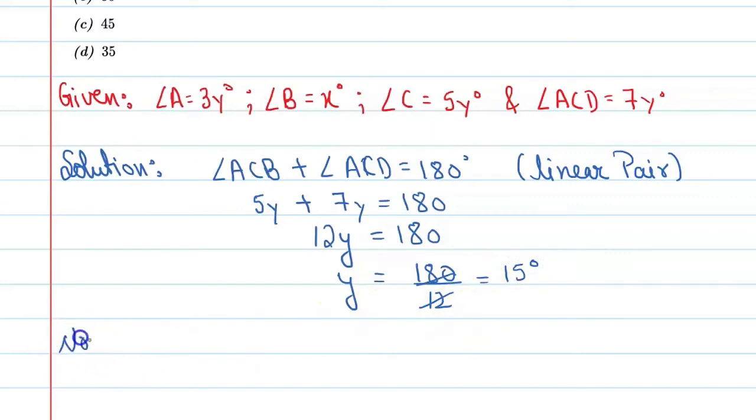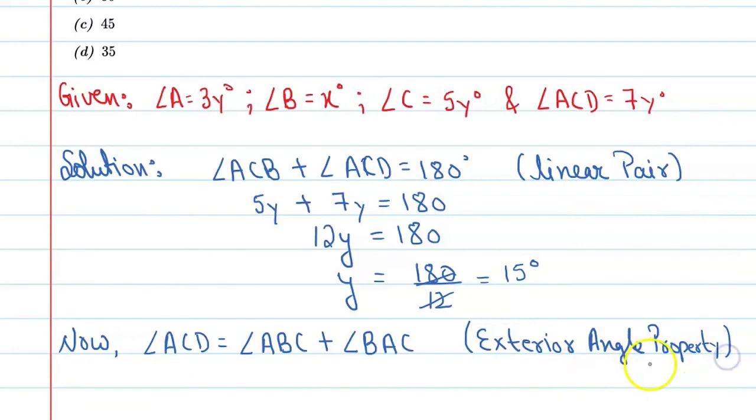Now, angle ACD is equal to angle ABC plus angle BAC because of exterior angle property. So you can say this 7Y is equal to X plus 3Y.